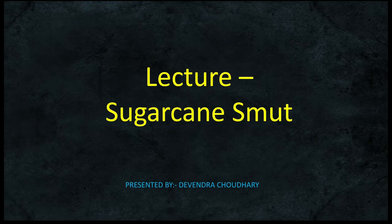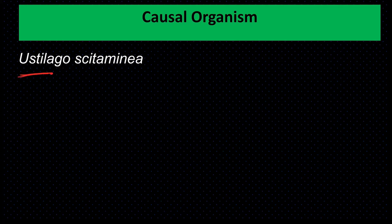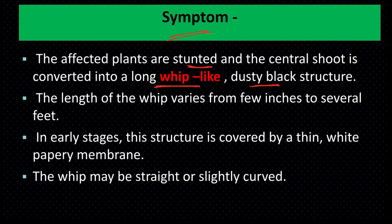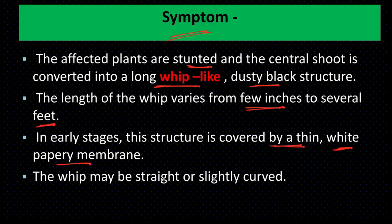Sugarcane smut: the causal organism is Ustilago scitaminea, belonging to subdivision Basidiomycotina. The affected plants are stunted and the central shoot is converted into a long whip-like dusty black structure. The length of the whip varies from a few inches to several feet. In early stage, this structure is covered by a thin white papery membrane.